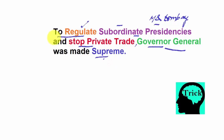So just remember this simple sentence: 'To regulate subordinate presidencies and stop private trade, Governor General was made supreme.' Hope you like this trick. I will be making similar tricks for all other constitutional development acts. Keep watching, don't forget to hit the like button, and check our test series — the link will be in the description. Thanks for watching, have a nice day.